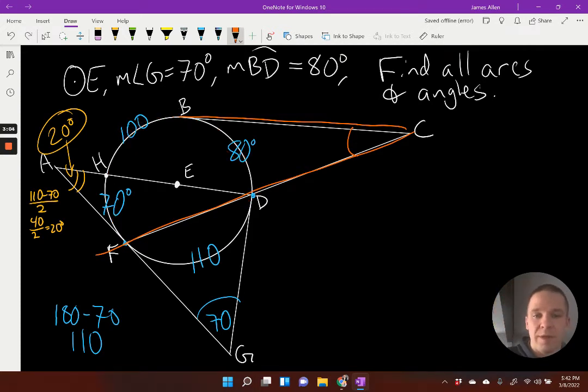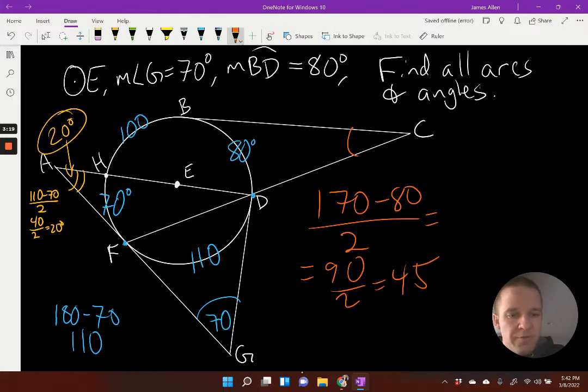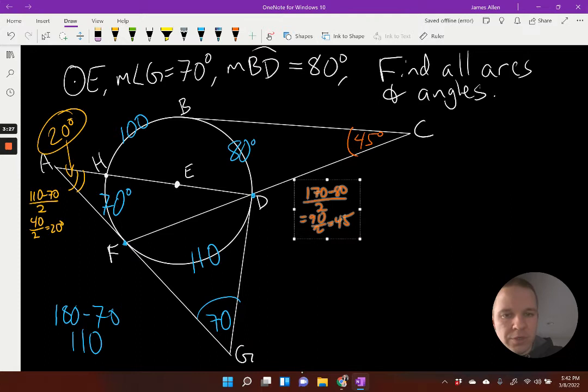So same formula as the last one, but we got to add the 100 and the 70 together. So I have 170 minus 80 divided by two. That's going to be 90 divided by two. 90 divided by two is 45. 45 degrees. Shrink it down. There we go.